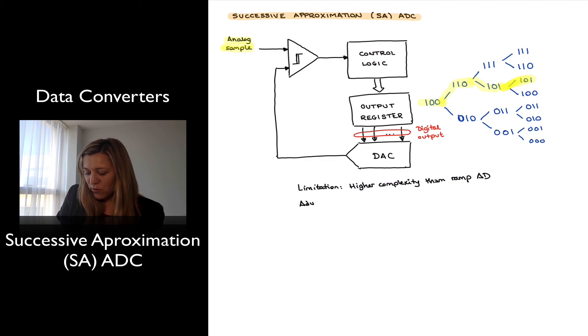But the advantage over the ramp ADC is going to be the faster speed, and the reason for that is that instead of needing 2 to the n cycles to move the counter from zero all the way to the full scale, in this case I only need n cycles to determine my output value, my digital output.